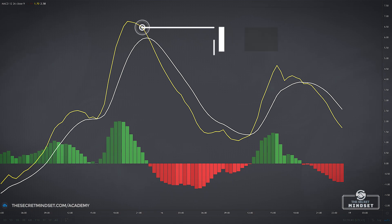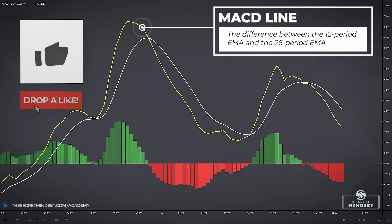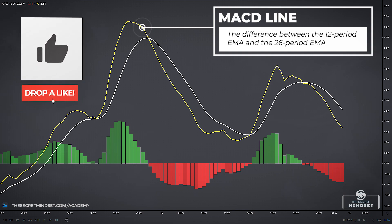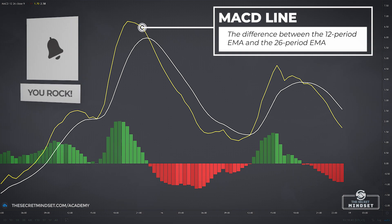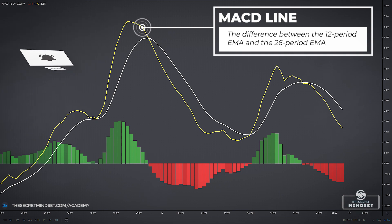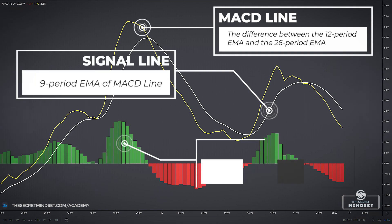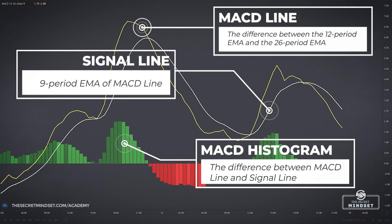We have the MACD line representing the heart of the indicator, and by default it is the difference between the 12-period EMA and the 26-period EMA. This means that the MACD line is basically a complete moving average crossover system by itself. Then we have the signal line, which is the 9-period EMA of the MACD line. And the MACD histogram, the difference between the MACD line and the signal line. Now let's analyze the best 10 MACD signals, one by one.